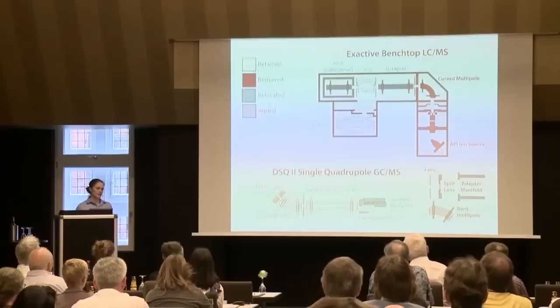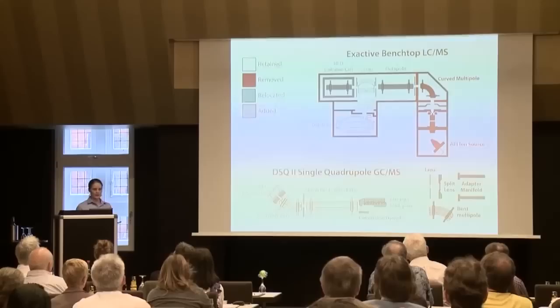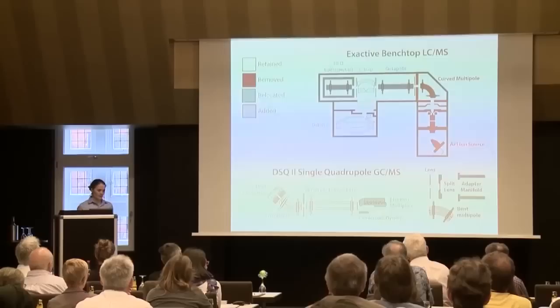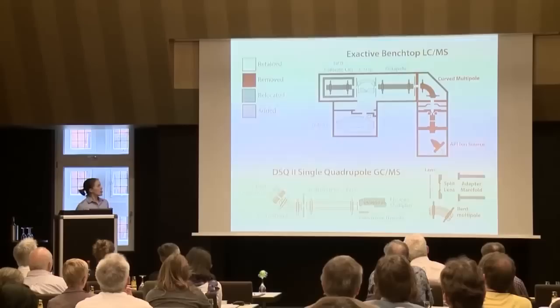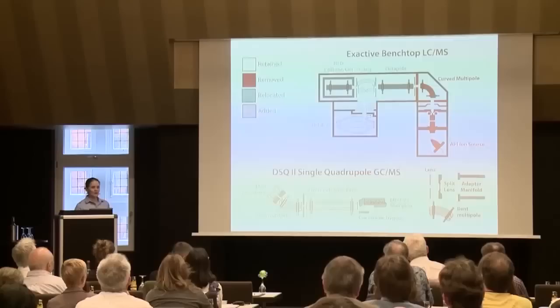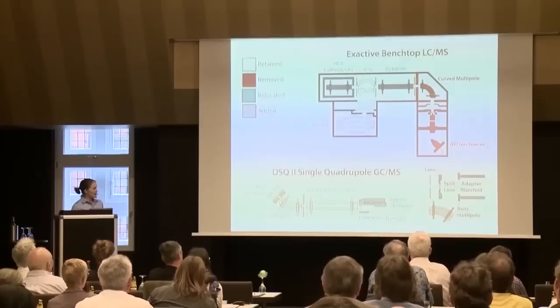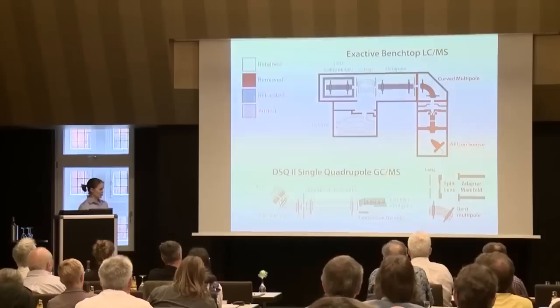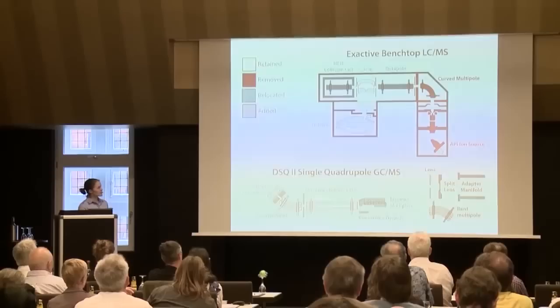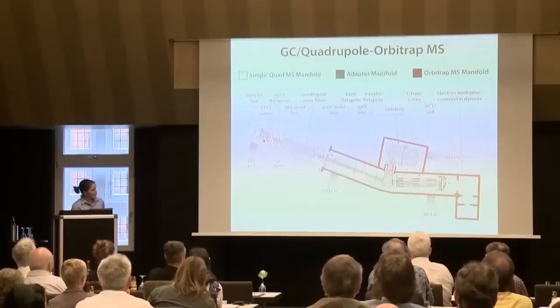After showing as a proof of principle on a LTQ orbitrap enabled with ETD that GC-created, or electron ionization-created ions could be analyzed in an orbitrap, we went on to trying to build something that would be useful to the community, with potential for commercialization. That was based on the X-ACTIVE benchtop LC-MS, which has an atmospheric ion source. Ions are directed then into the C-trap and the orbitrap. To provide our interface to the gas chromatograph, we took a single-quad GC-MS, and by removing and plugging this area, flipping these around, we were able to plug in the GC on this side to form this monster.